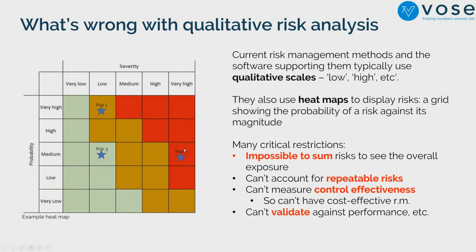The problem with this approach is that it's impossible to sum risks. You can't say what these three risks total up to. Even if you convert to numeric scores from one to five on each scale and multiply them together, you still can't use those scales to add risks together and figure out the complete exposure. That's actually very important — you want to know where risks are concentrated, whether in one particular business or project.